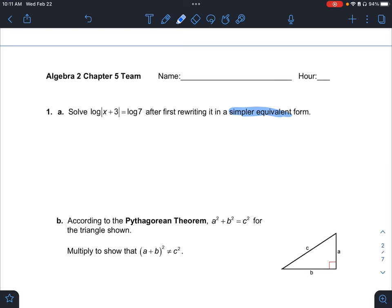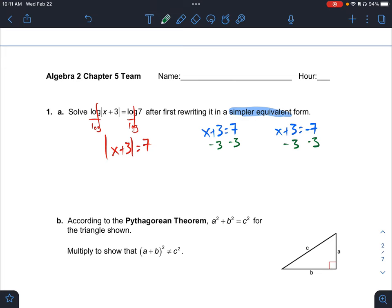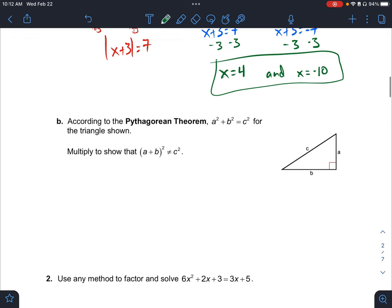I know we've been talking about logs, but the key here is we're wanting a simpler equivalent form. So here we can divide out a log on both sides, cancel. We get absolute value of x plus 3 is equal to 7. This should be much easier for us to solve. So we're going to set up our two equations, x plus 3 equals 7, x plus 3 equals negative 7, and solve. Don't forget you do have to have two of these for absolute value, and we get x equals 4 and x equals negative 10.